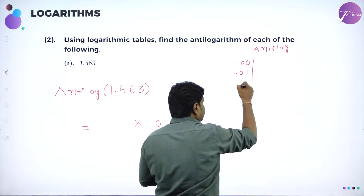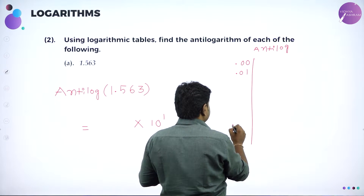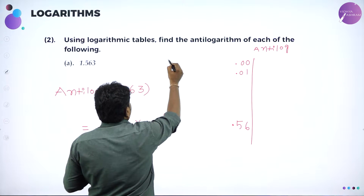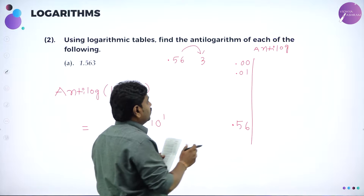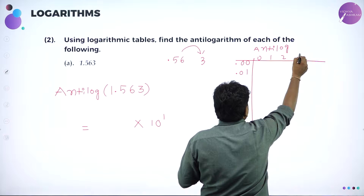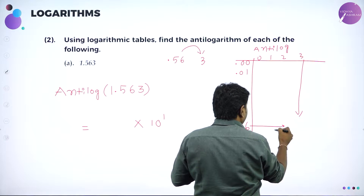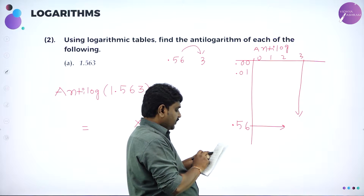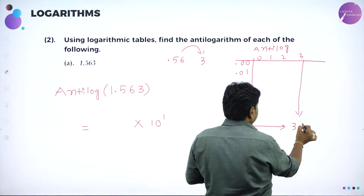In the anti-log table, entries go 0.00, 0.01, and so on. We need 0.56. Find where 0.56 is present. The next digit after 0.56 is 3, so look under column 3 in the row for 0.56. Reading 0.56 under column 3 gives you 3656.